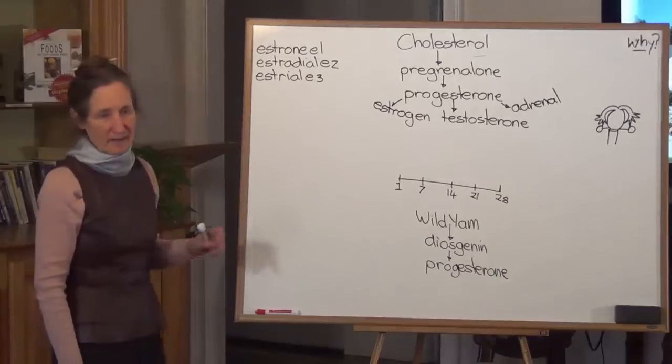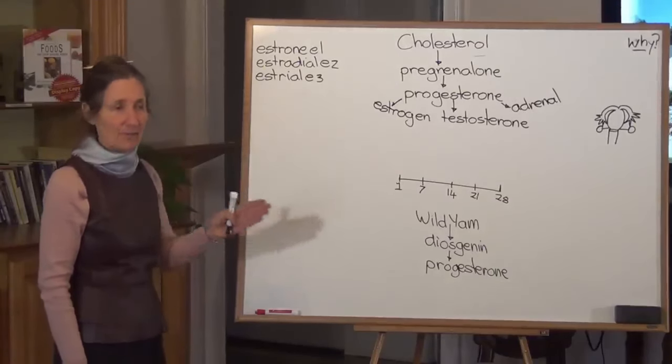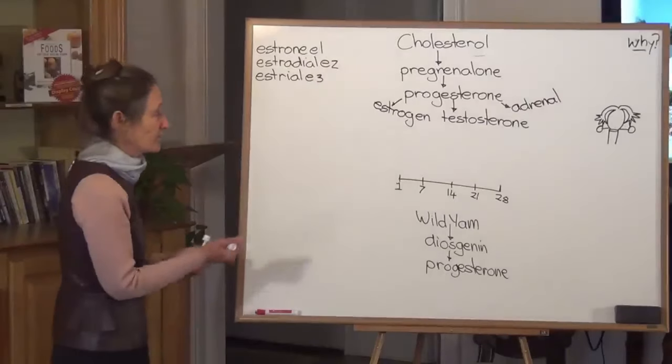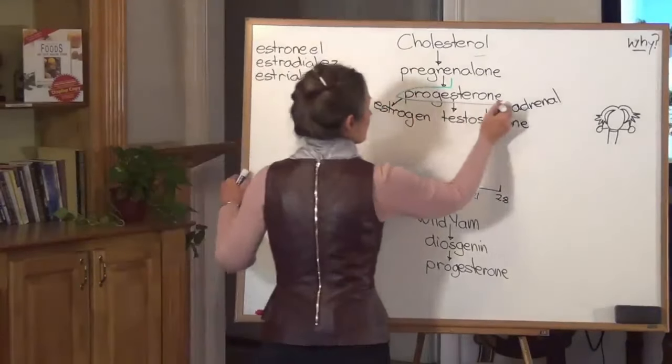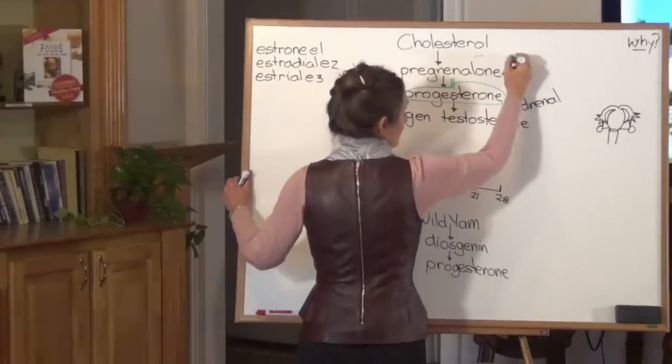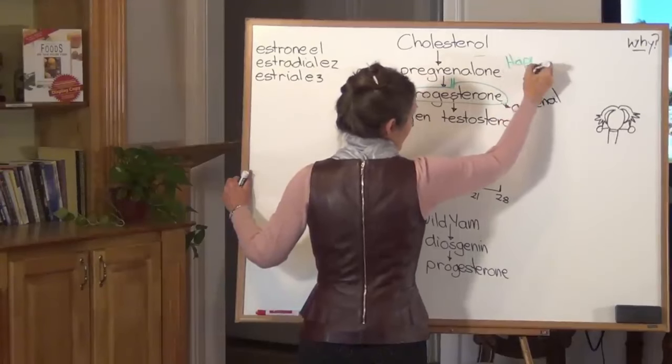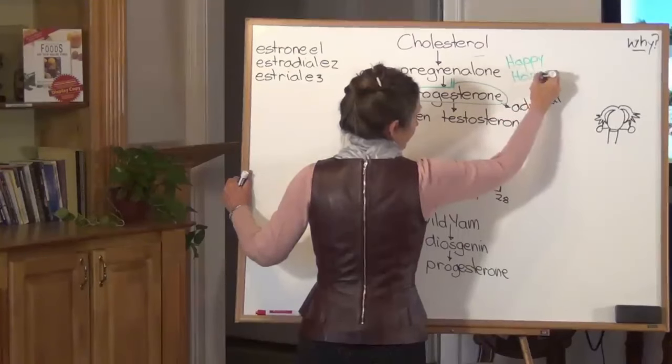I'm going to explain the monthly cycle like a dance because it is like a dance. Different players come onto the stage at different times of the month. Progesterone is one of our star players. And progesterone is going to be wearing a green dress in this dance. And progesterone's nickname is happy hormone. What's the old saying? Happy wife, happy life.